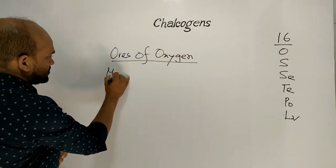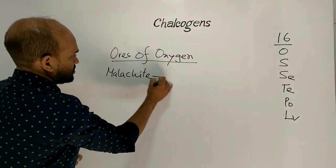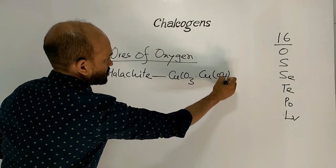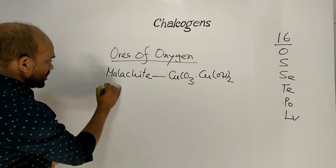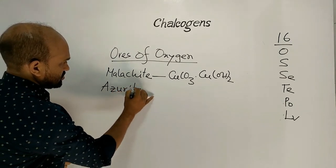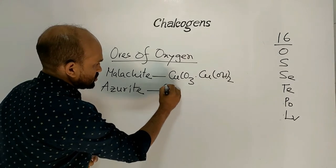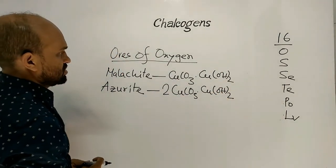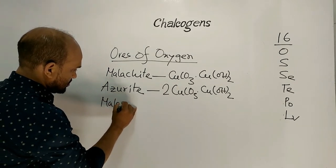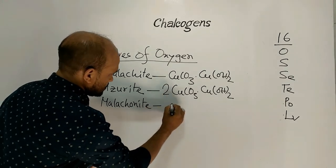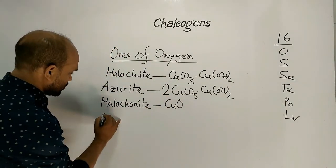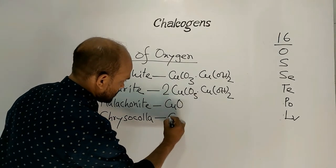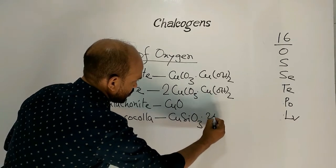Ores of Oxygen. First, Malachite — formula is copper carbonate and copper hydroxide [Cu₂(CO₃)(OH)₂]. Next, Malachonite — this is copper oxide (CuO). Then Chrysocolla — formula is copper silicate with two molecules of water.